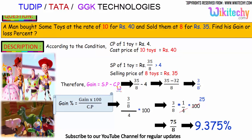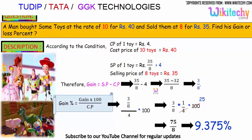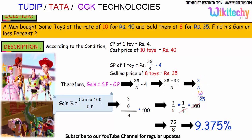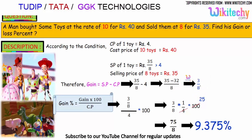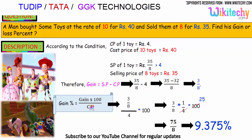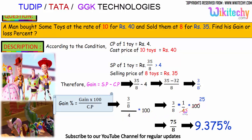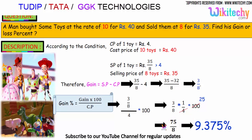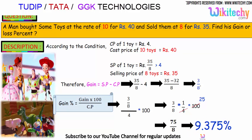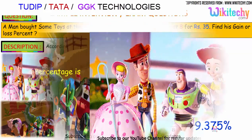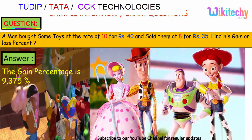Gain equals selling price minus cost price: 35 divided by 8 minus 4, which gives 3 by 8. The gain percentage is gain into 100 divided by cost price: 3 by 8 divided by 4 into 100, giving 75 divided by 8. So the gain percentage is 9.375%.